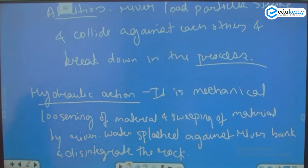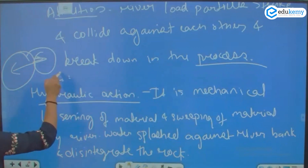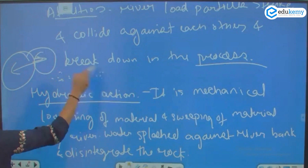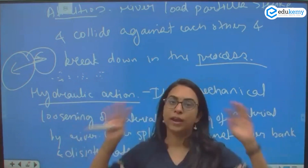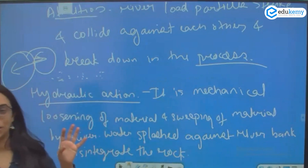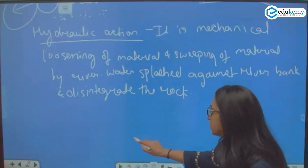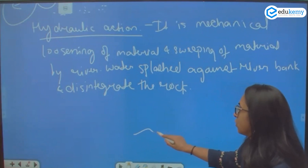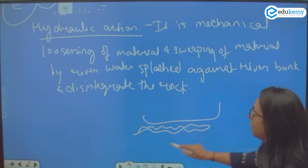Attrition: the river particles strike and collide against each other and break down in the process. In hydraulic action, suppose this is the bank and this is the river which is flowing — the river splashes water against the bank.